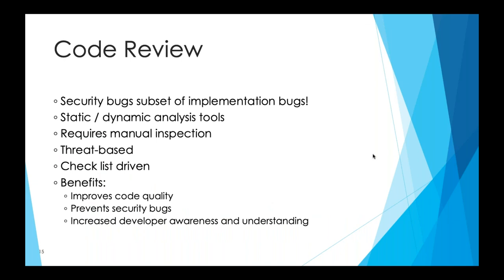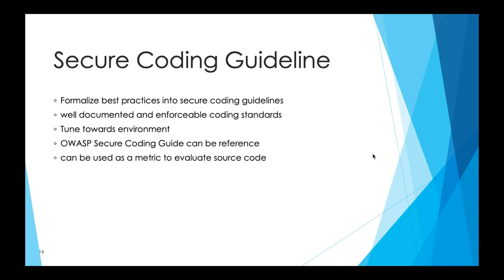These are guidelines stating that security bugs are a subset of implementation bugs. You have to make sure you do proper static analysis before doing dynamic analysis — it will give you confidence that your application is at least 95% safe, if not 100%, because nothing on the internet is 100% safe. OWASP has secure coding guidelines where you can see checklists and points to consider when doing a code review.